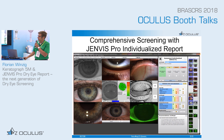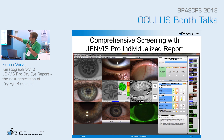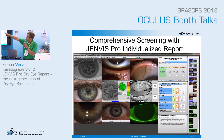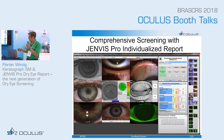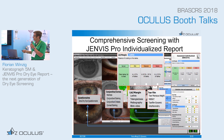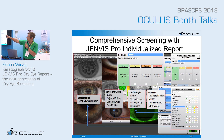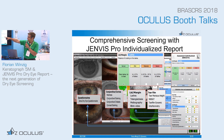Once all capturing sessions are finished, you move to the assessment step. Here you have all captured images and videos. By clicking the 'collective view and assessment' button, all useful images and videos appear on one screen for a quick assessment. To support a thorough diagnosis, findings are separated into four subcategories: tear film (tear meniscus height, NIBUT, tear film dynamic, and interferometry); lid and lid margin and lashes.